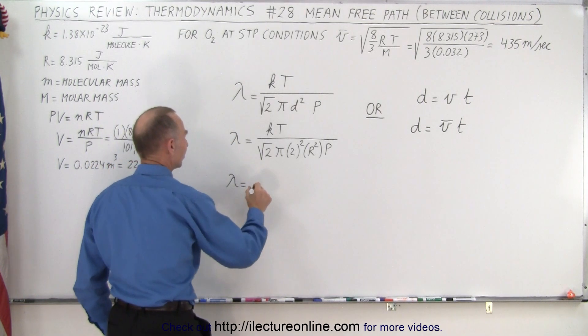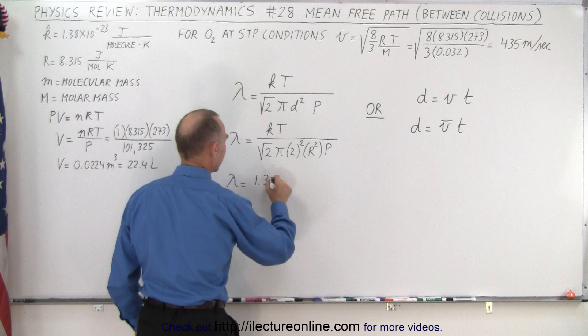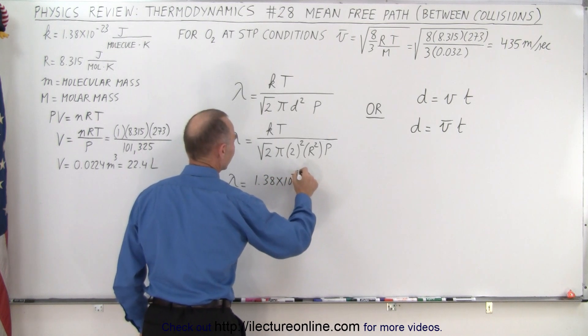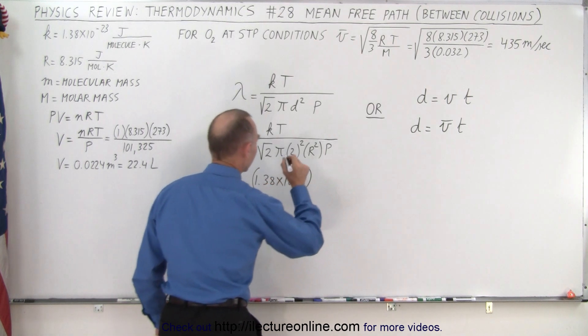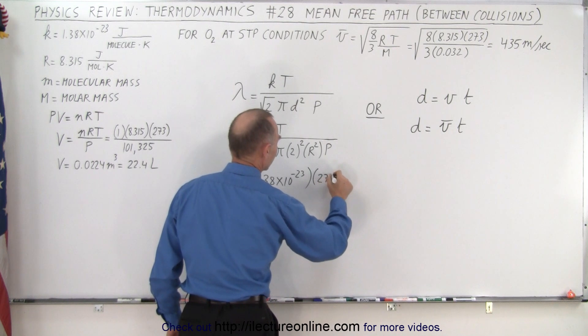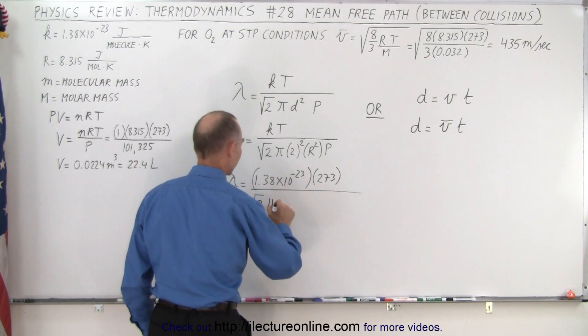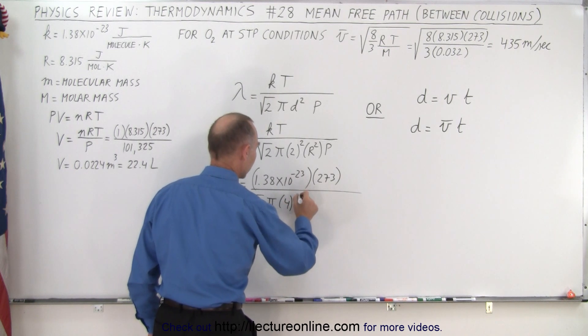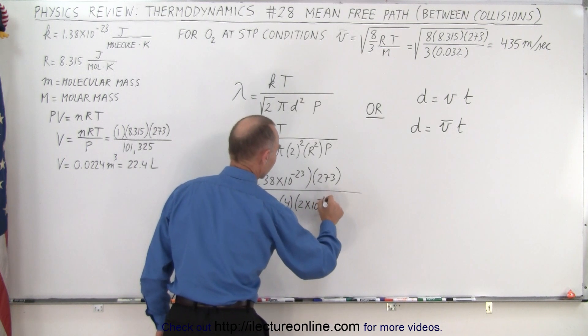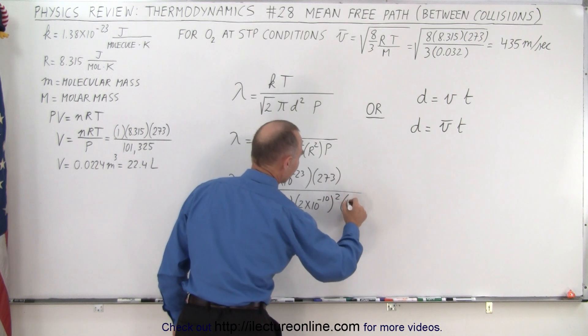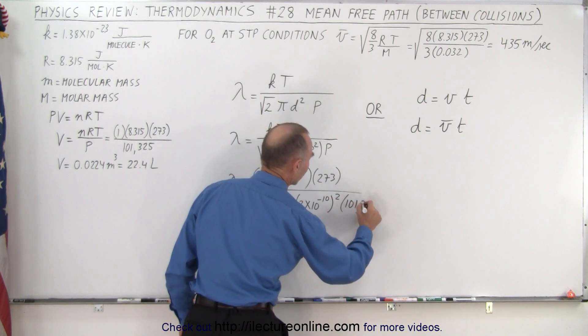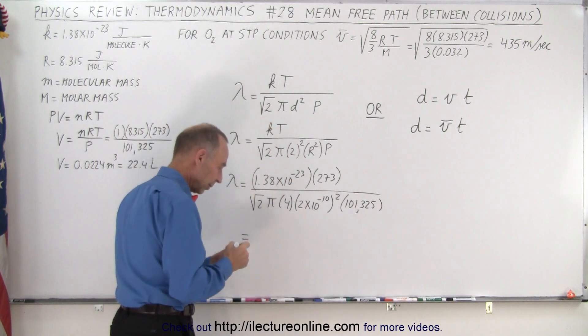Okay, we got lambda is equal to 1.38 times 10 to the minus 23. The temperature is 273 Kelvin divided by the square root of 2 times pi times 4 times 2 times 10 to the minus 10 squared times 101,325 Pascals. And let's see what we got.